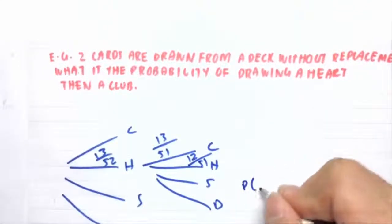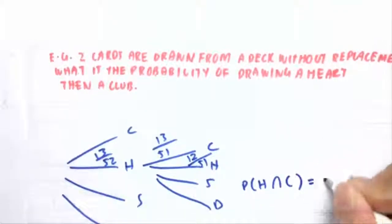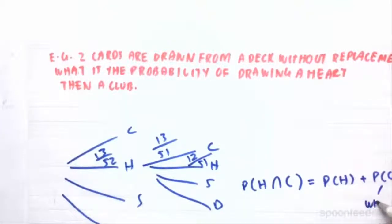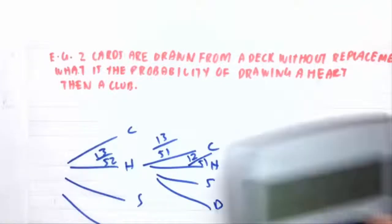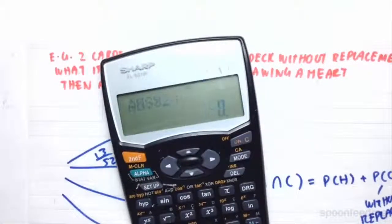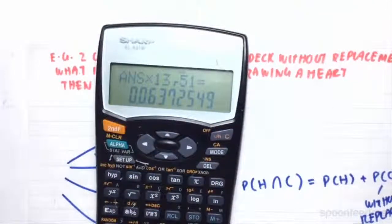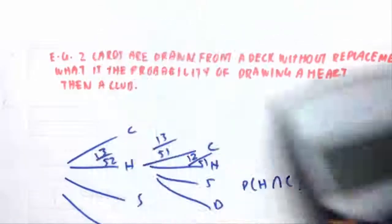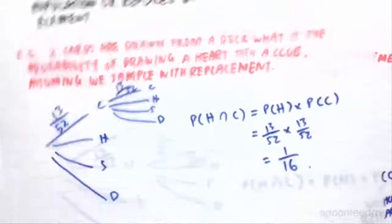So therefore, the probability of drawing a heart and a club would equal the probability of just drawing the heart, times the probability of drawing a club without replacement. So this would equal to 13 on 52, times 13 on 51, which would equal to 0.064, or 13 on 204, which is slightly larger than the value that we got here, because we did replace it.